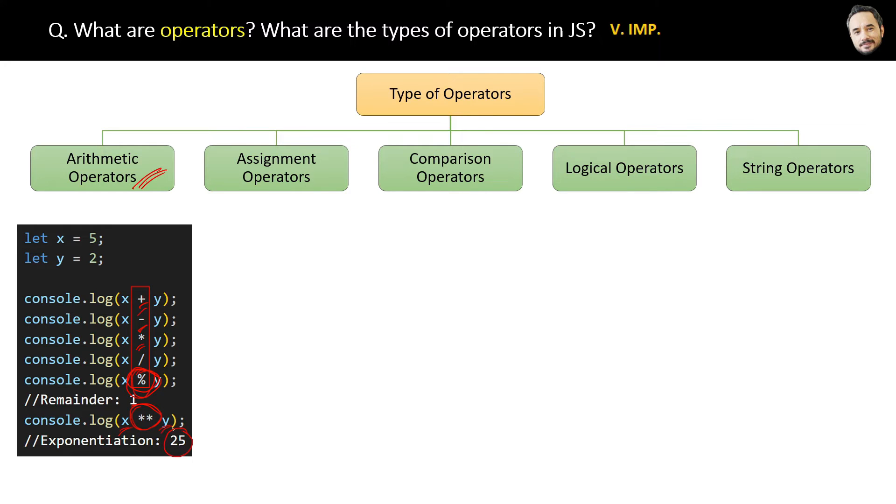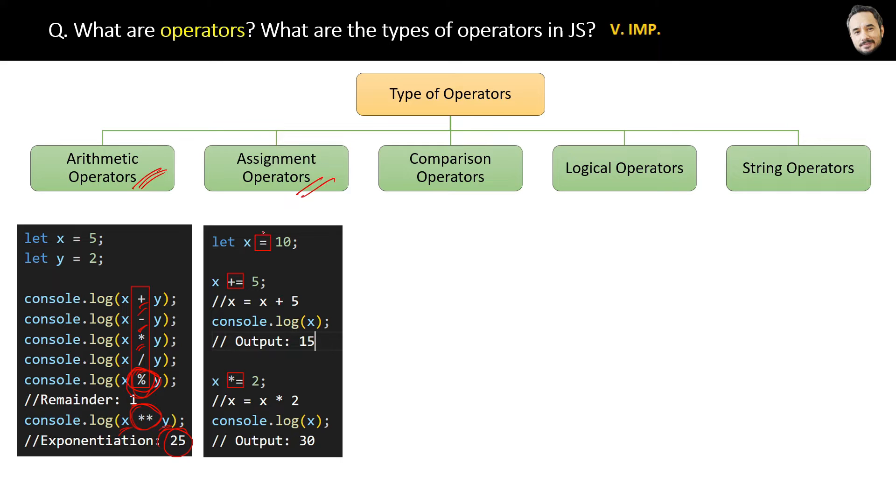The second category of operators are assignment operators. Here is the code. First is the most common one, equals to. Then plus equal to, which is equivalent to x equal to x plus 5. Then multiply equal to, equivalent to x equal to x multiply by 2. So basically all three are used to assign values to the variables.